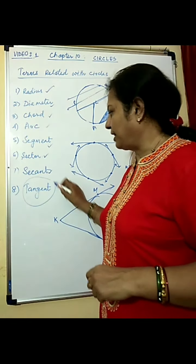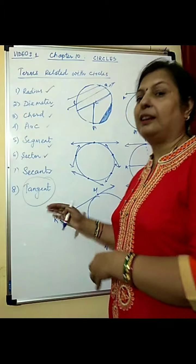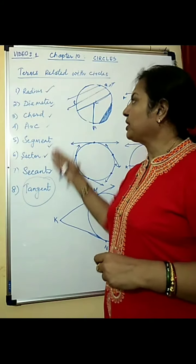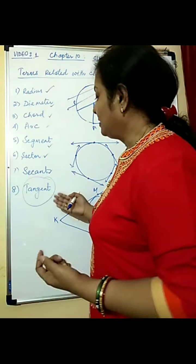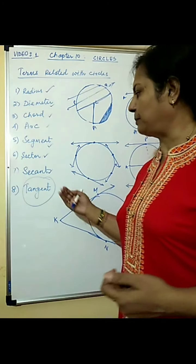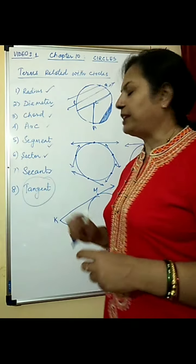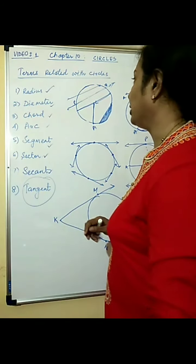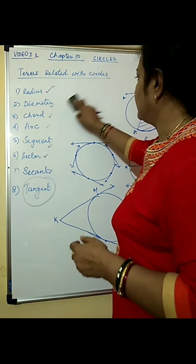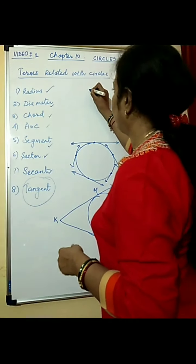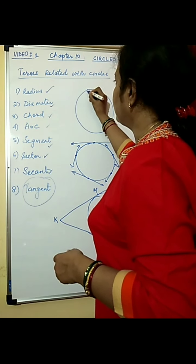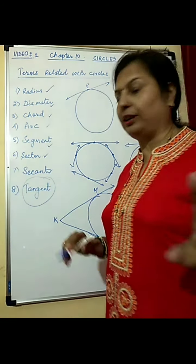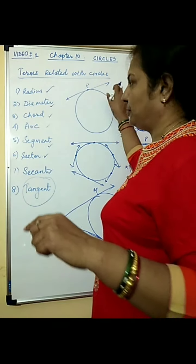The most important line which we are going to use in this chapter is the tangent. Tangent is a line which touches the circle at exactly one point. If this is any point on the circle, then a line which touches the circle at only one point is called the tangent of a circle.